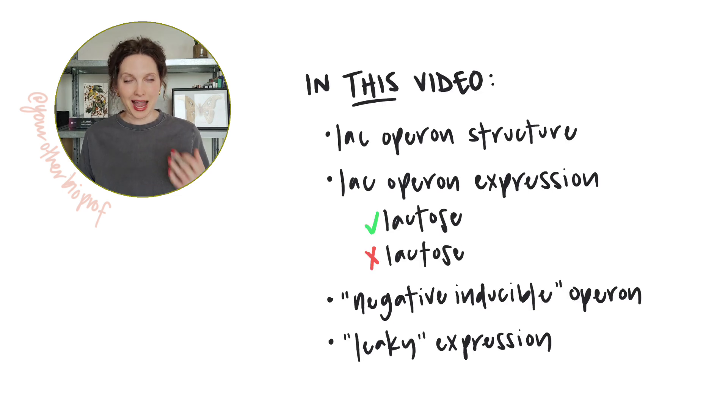Different classes focus on different aspects of the lac operon, so we'll do this in parts so you can sort of customize, choose your own adventure. This first video is for everyone. We're going to talk about the structure of the lac operon, what the different components are and what they do, and how lactose availability controls expression of the lac operon. And towards the end of this video, we'll see why the lac operon is described as a negative inducible operon, and I'll clear up a couple of common misconceptions.